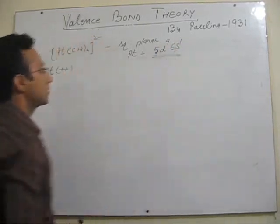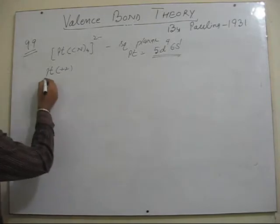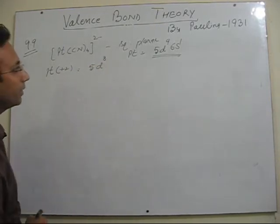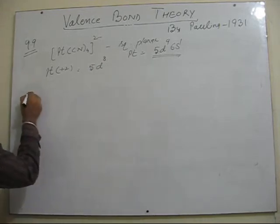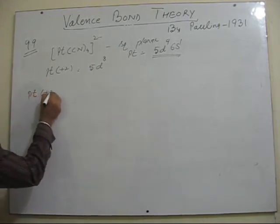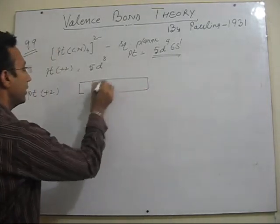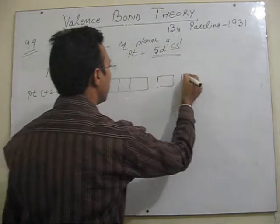If I write platinum in the ground state, its electronic configuration is 5d9 6s1. I am writing the valence shell only. So in its plus 2 oxidation state it will be a case of 5d8.